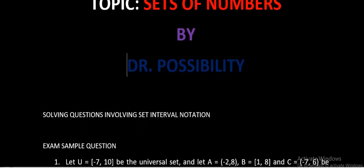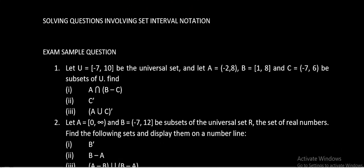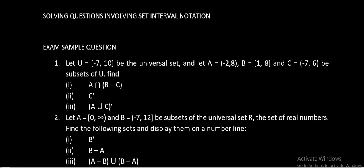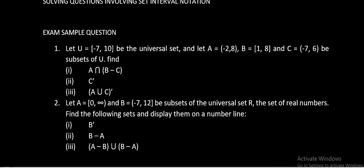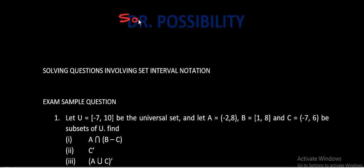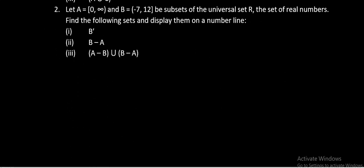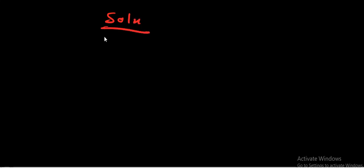The first question: let U be equal to a given set — this U is our universal set. Please make sure that you screenshot or pause the video so that you write down these questions. My solution for question one: we have been given that U is equal to block brackets seven comma ten.